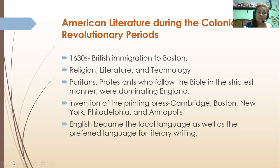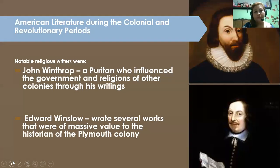At this time, there was the invention of the printing press in Cambridge, Boston, New York, Philadelphia, and Annapolis. When there is a printing press, the faster literary pieces will be published. Because of that, English became the local language as well as the preferred language for literary writing.